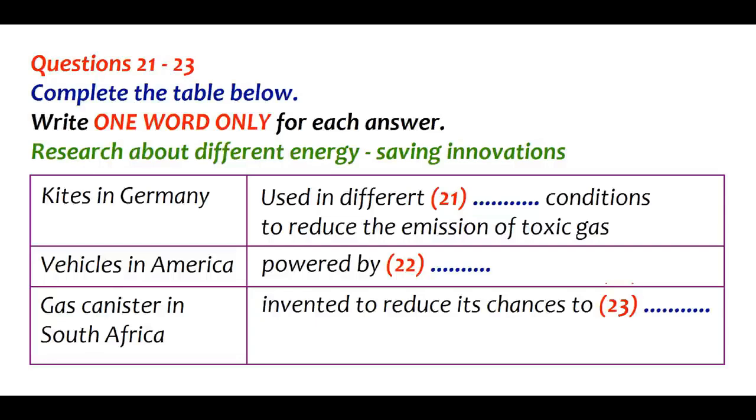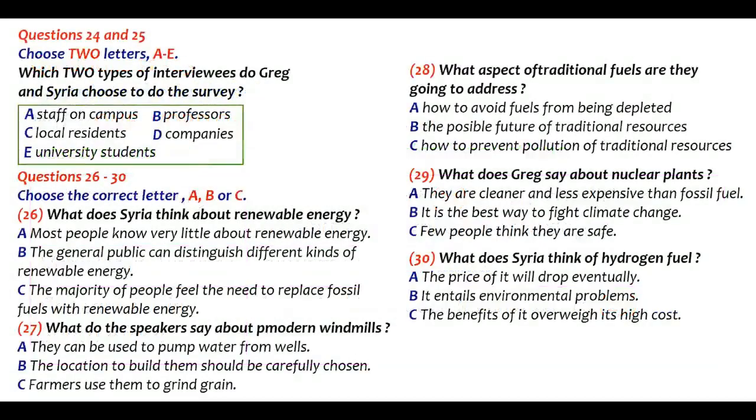Propane gas is normally stored in gas canisters as a type of cooking gas. To reduce the number of kitchen accidents, a new type of composite gas canister made of fibre was introduced. It is much safer and less likely to explode, even when engulfed in fire. Before you hear the rest of the talk, you have some time to look at questions 24 to 30.